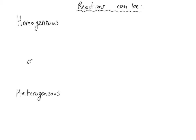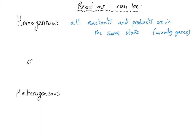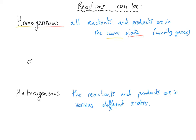Before exploring Le Chatelier more deeply, let's clarify two terms. Chemical reactions can be described as homogeneous or heterogeneous. A homogeneous situation is when all the reactants and products are in the same state — normally all gases. This comes from 'homo' meaning the same. Heterogeneous, from 'hetero' meaning different, means all the reactants and products could be in a variety of different states. In terms of equilibria, you're only concerned with homogeneous equilibria situations.